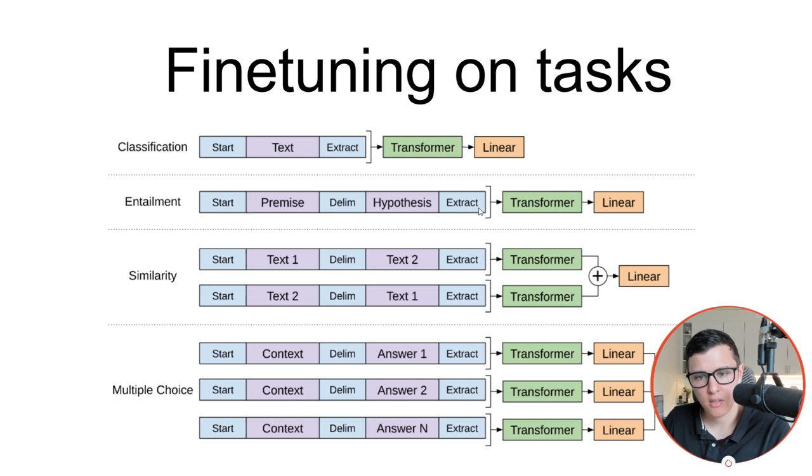then we just do a start token, we have what they call the premise sentence one, they have a separator, and then they have a hypothesis sentence two, and then finally an extract token. I'm not really sure why they call it extract, but then they send it to the transformer and then finally hook that up to a linear layer as well.